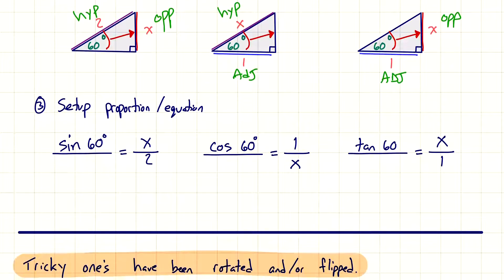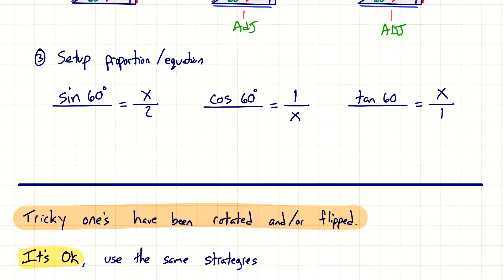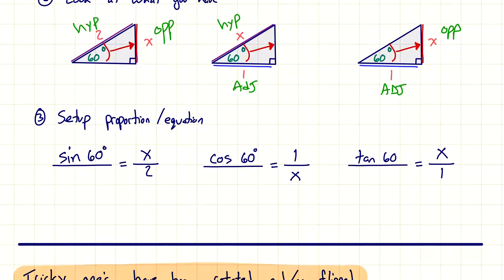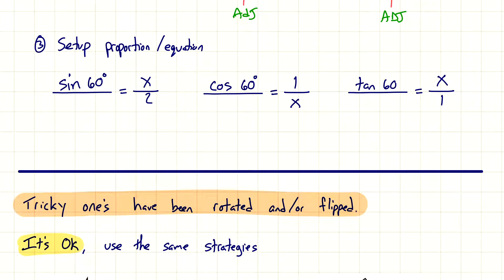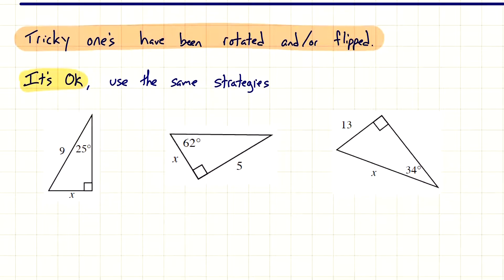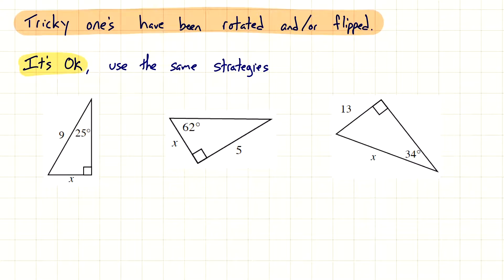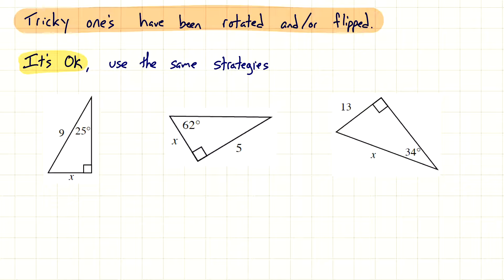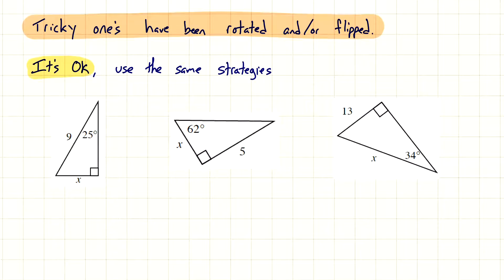These examples were all drawn the same way, which makes it easier. The trickier ones are where the triangle has been rotated or flipped. But we just use the same strategies — we're going to look at three problems where the triangles are positioned differently than the ones we just saw.